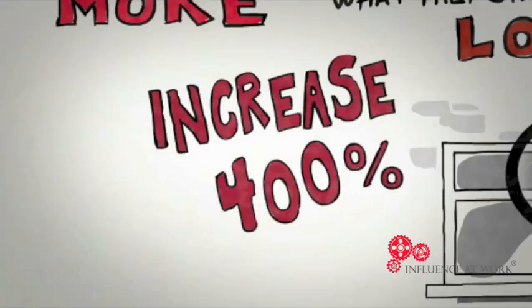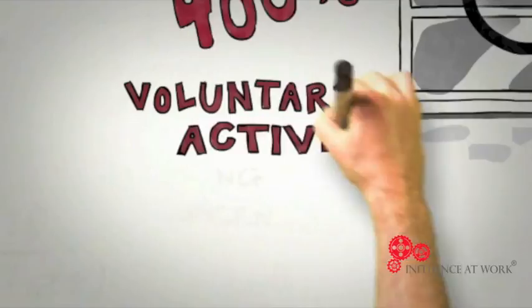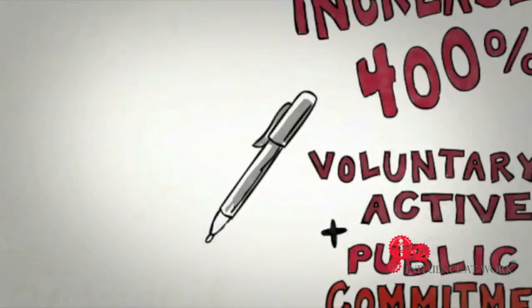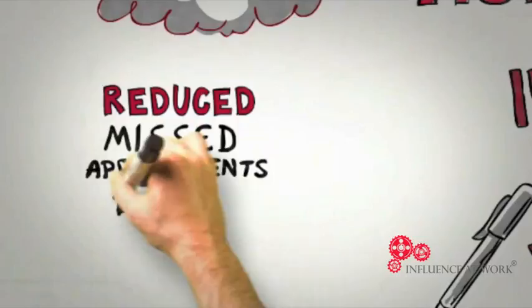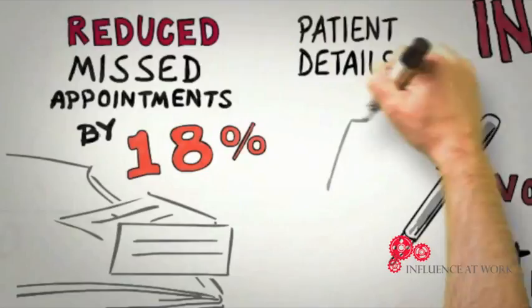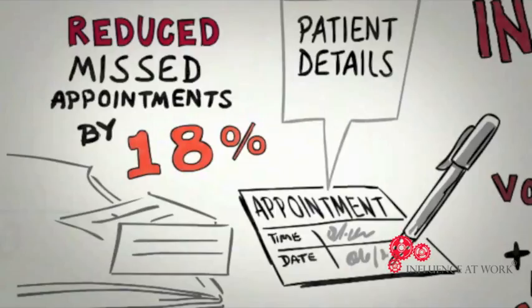That small card was the initial commitment that led to a 400% increase in a much bigger but still consistent change. So when seeking to influence using the consistency principle, the detective of influence looks for voluntary, active, and public commitments and ideally gets those commitments in writing. For example, one recent study reduced missed appointments at health centers by 18% simply by asking the patients rather than the staff to write down appointment details on the future appointment card.